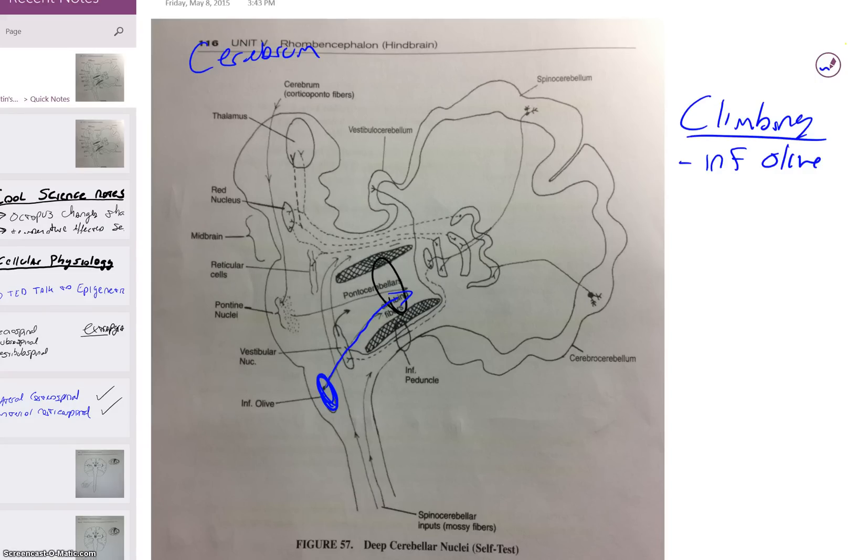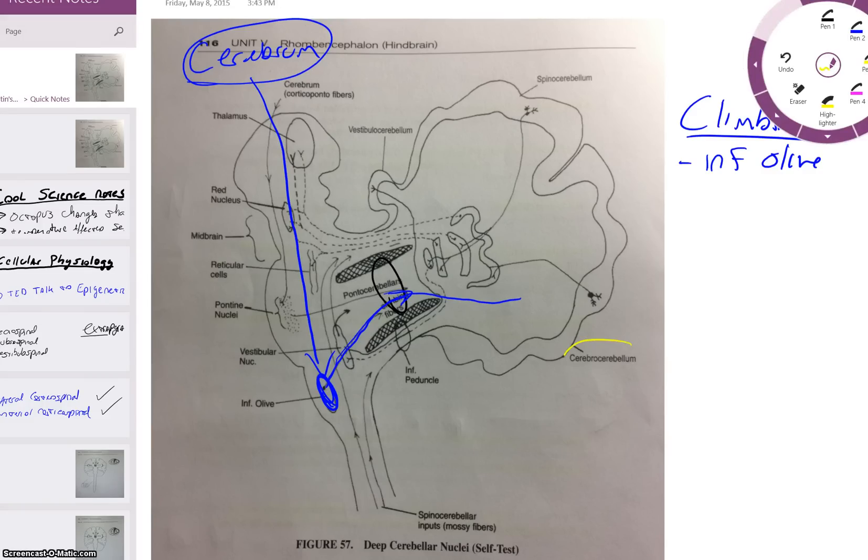And the inferior olive's main source of input is from the cerebrum. I don't think there's a detail we have to know, but it helped me to visualize the entire pathway. So we've got the cerebrum up here. So the cerebrum sends information down into the inferior olive. Now because it's coming from the cerebrum, we know its only option is to go to the cerebrocerebellum, which is roughly this lower half.